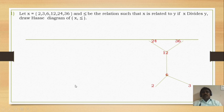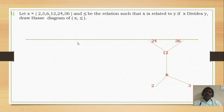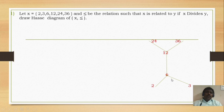We can draw the Hasse diagram using a line also. We have to keep in mind that the poset must satisfy RAT — reflexive, anti-symmetric, and transitive property — and check the three conditions: remove reflexivity, remove transitivity, and remove all the arrows. Then we get the Hasse diagram. The condition is x divides y and ≤. Here 2 divides 6 and 3 divides 6; 6 divides 12; 12 divides 24 and 12 divides 36. This is a very important problem asked many times in examinations.